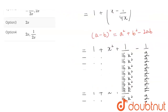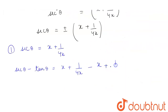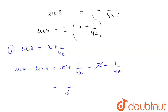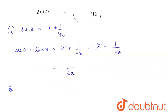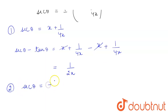The x minus and minus will become plus 4x. The x terms cancel, giving us 1 upon 2x. Now for the second case where sec θ is equal to minus of (x plus 1 upon 4x).